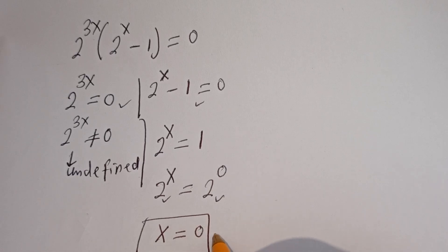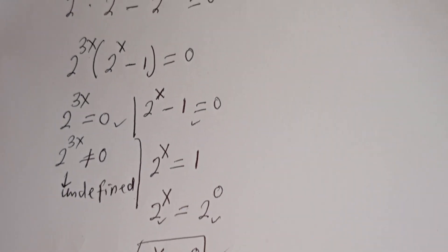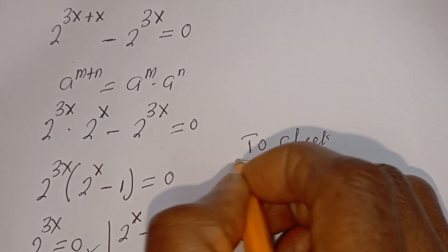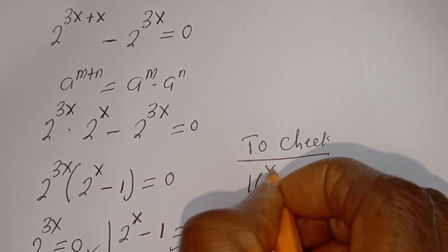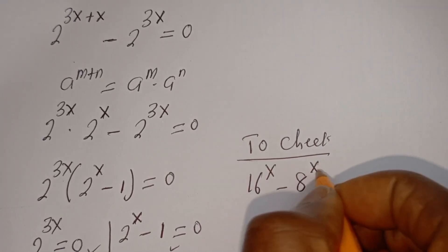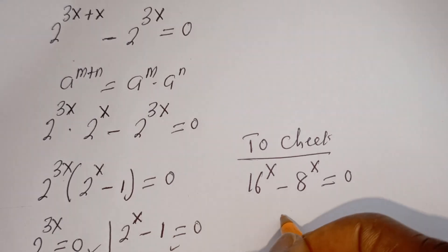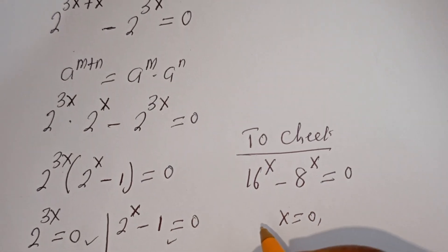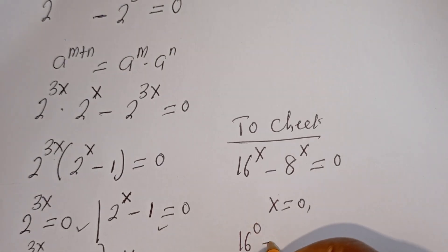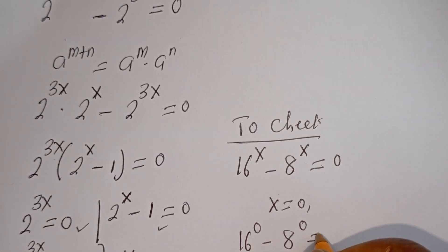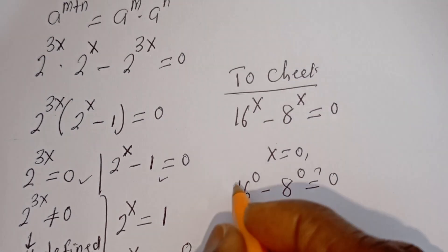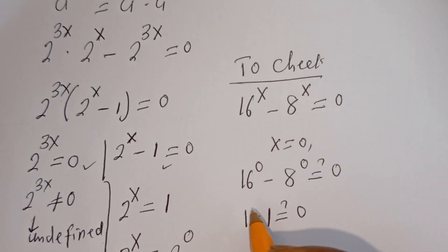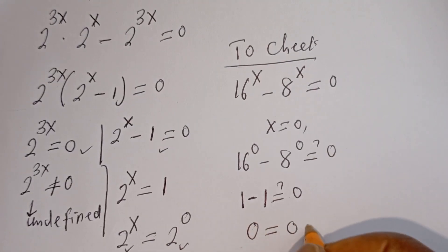And this is the final answer. We can check to confirm if this answer is right or wrong. To check: we have 16 to the power of x minus 8 to the power of x is equal to zero. When x is equal to zero, we have 16 to the power of zero minus 8 to the power of zero must equal zero. 16 to the power of zero is 1, minus 8 to the power of zero is 1, must equal zero. One minus one is zero — it is equal to zero, which is true.